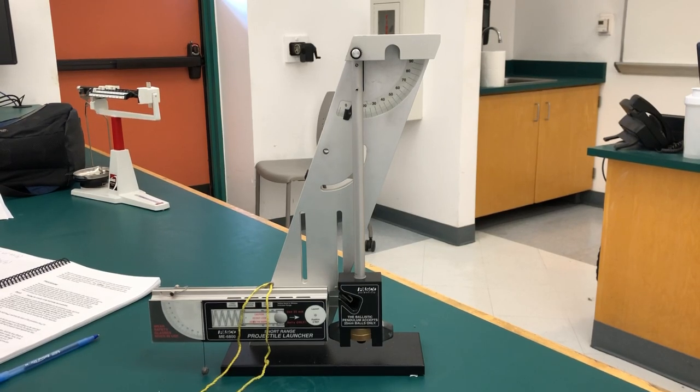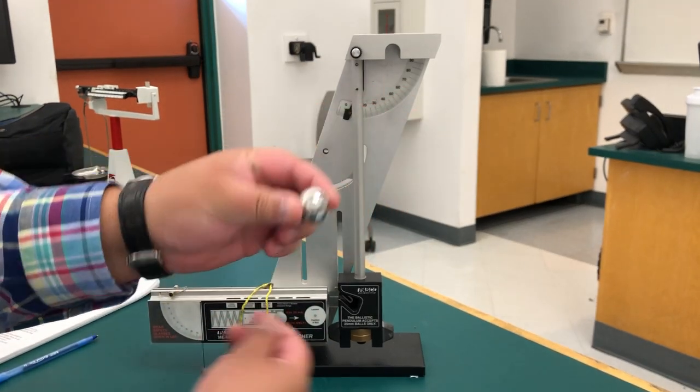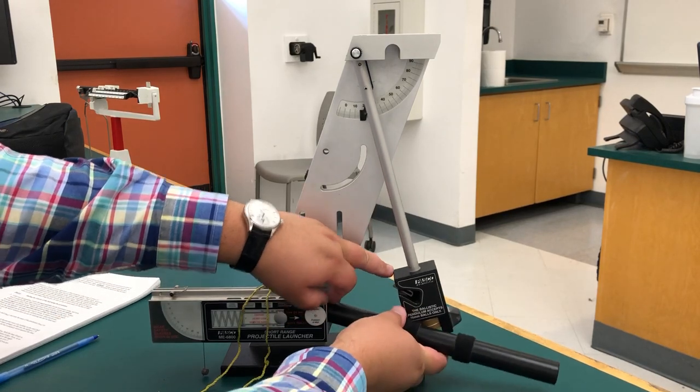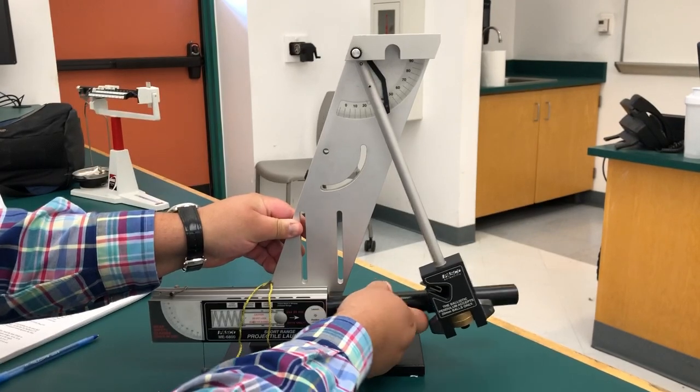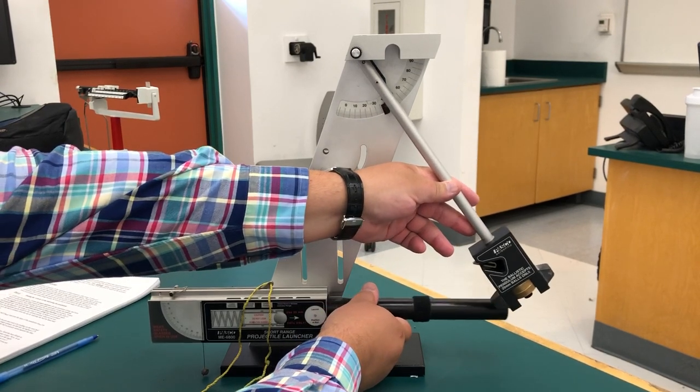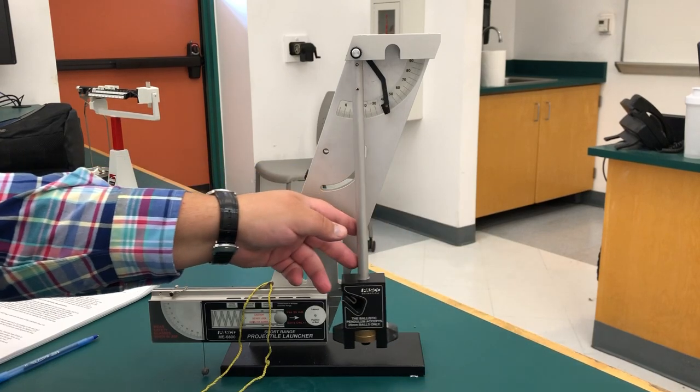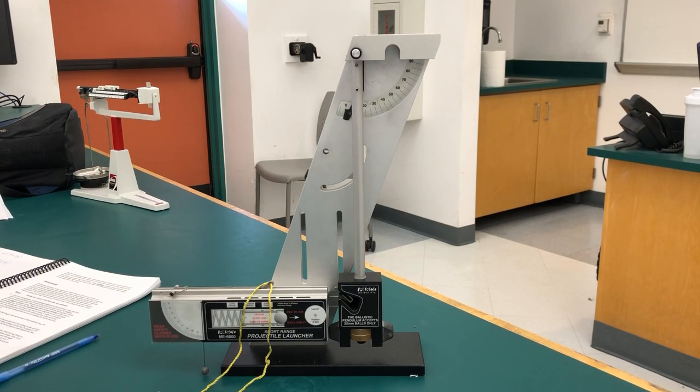Okay, it is time to do the long setting for the angle experiment. Same steel ball loaded in the same launcher - short, medium, long. I have to put the angle reading to zero and I'm ready to fire the launcher. One, two, three.